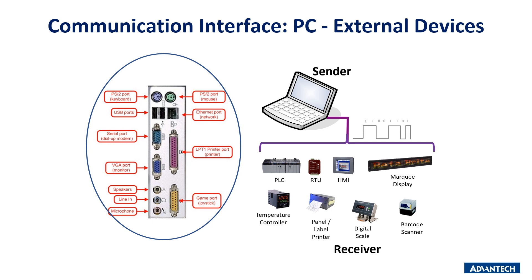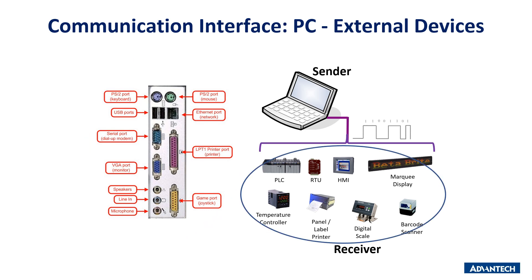In most industrial applications, the serial port with nine pins is used. This allows communication between the computer and serial devices such as PLCs, RTUs, HMIs, printers, digital scales, barcodes, or any device that supports serial communication. All these devices follow the same principle: data travels through cables to allow exchange between sender and receiver.